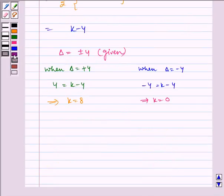Therefore, required values of k are 0 comma 8. I hope you understood the problem. Bye and have a nice day.